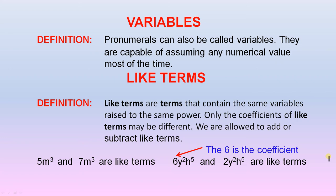Variables. Definition. Pronumerals can also be called variables. They are capable of assuming any numerical value most of the time.